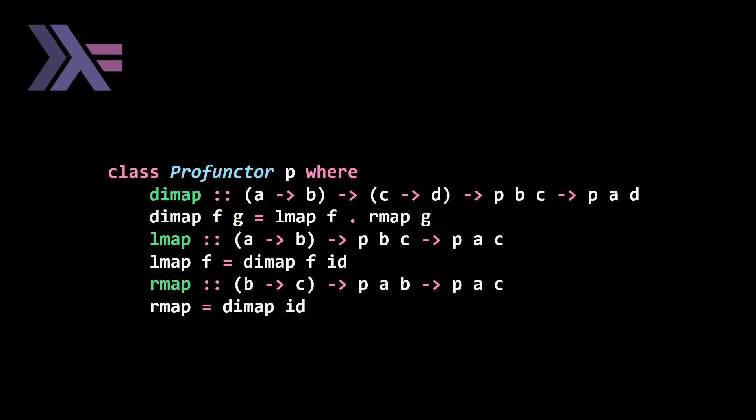And if we take a look quickly at the Haskell code from the textbook, profunctor similar to bifunctor has three type signatures in the type class. Instead of bimap, first and second, you have dimap, lmap and rmap, which similar to bifunctor, you only need to define either dimap or lmap and rmap. And then the reverse can be reverse engineered.